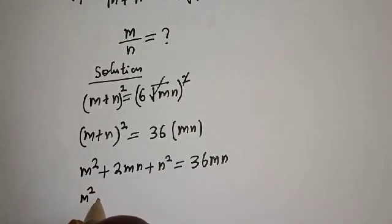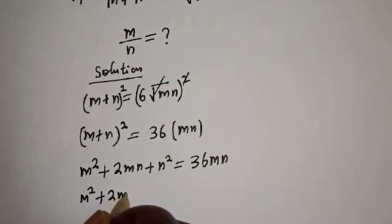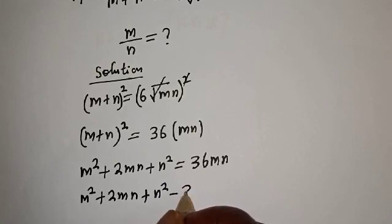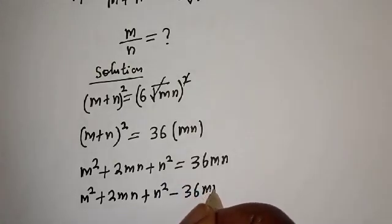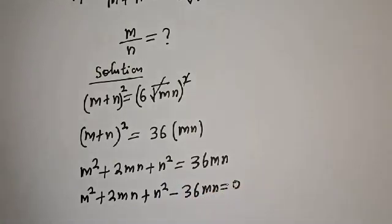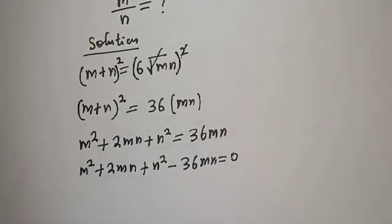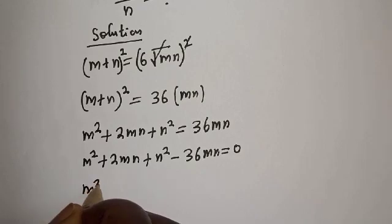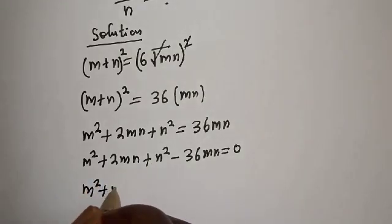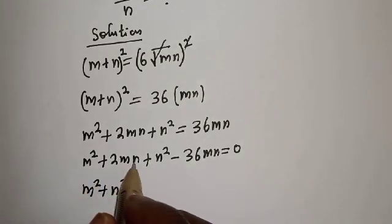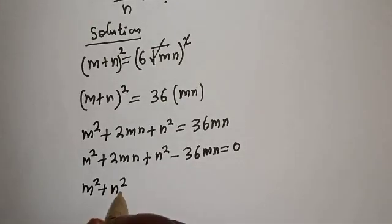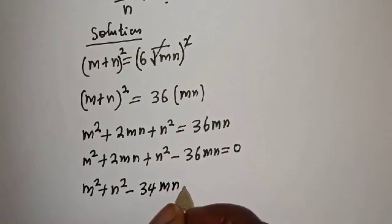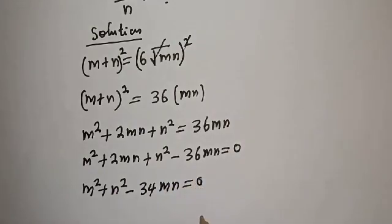m squared plus 2mn plus n squared minus 36mn is equal to zero. Then m squared plus n squared, and 2mn minus 36mn gives us minus 34mn, so m squared minus 34mn plus n squared is equal to zero.